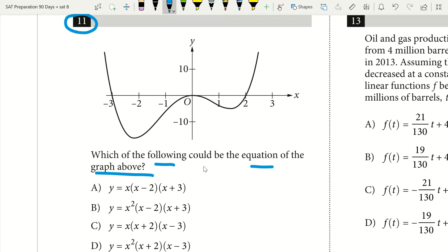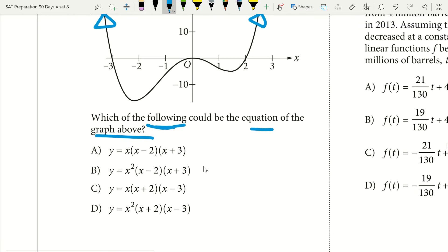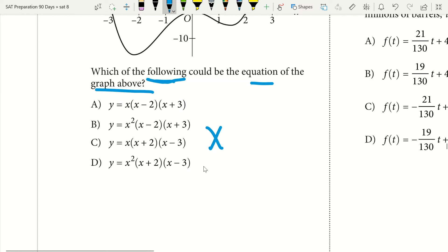The first thing I want to look at in my answer choices: I see it going up at the end on my left side and also going up on the end on my right side. My end behavior is both going up, so I know I have to have x to an even integer. It has to be an even number—it could be x squared, x to the fourth, but either way it's going to be an even number.